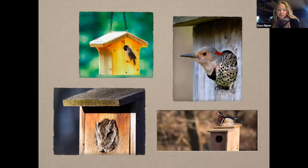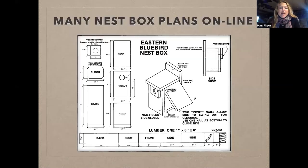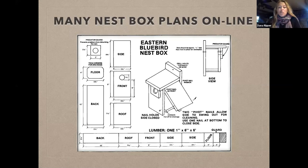Just a couple more examples of birds that use cavities and therefore nest boxes: house wren, northern flicker — which is a woodpecker that will sometimes use nest boxes for nesting or roosting in winter — wood duck, and screech owl. There are many nest box plans online; we recommend the North American Bluebird Society, which has plans backed by a lot of research into the most beneficial specifications. We recommend that you put out good boxes.